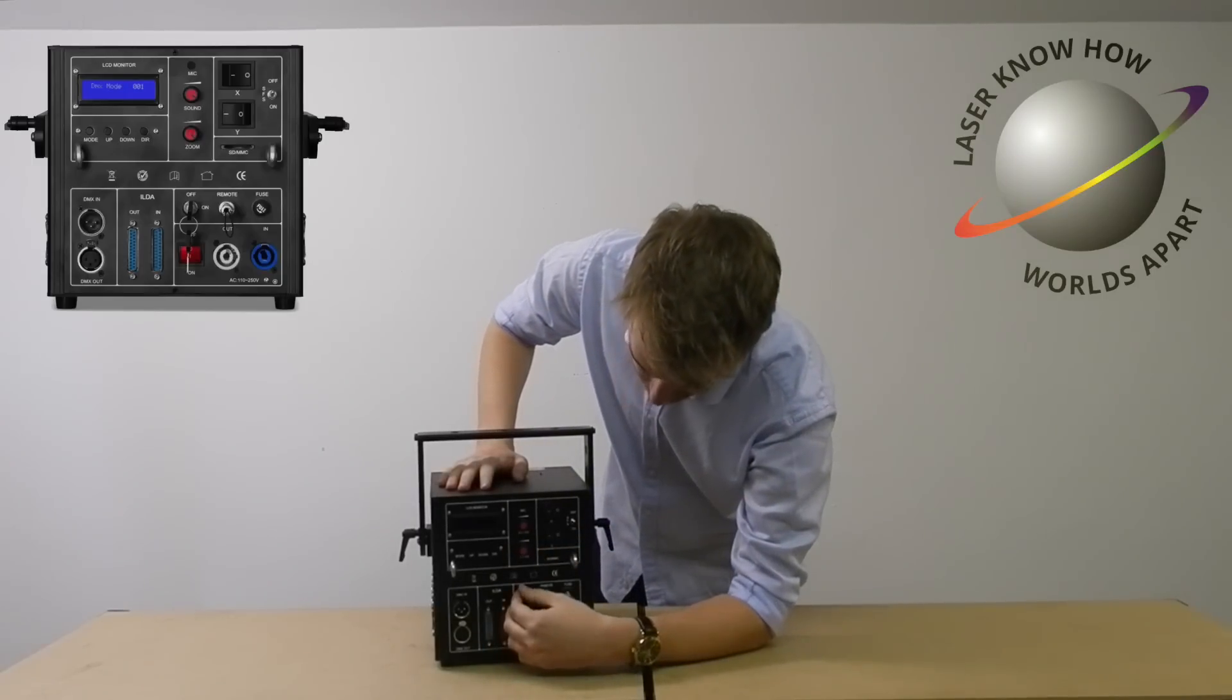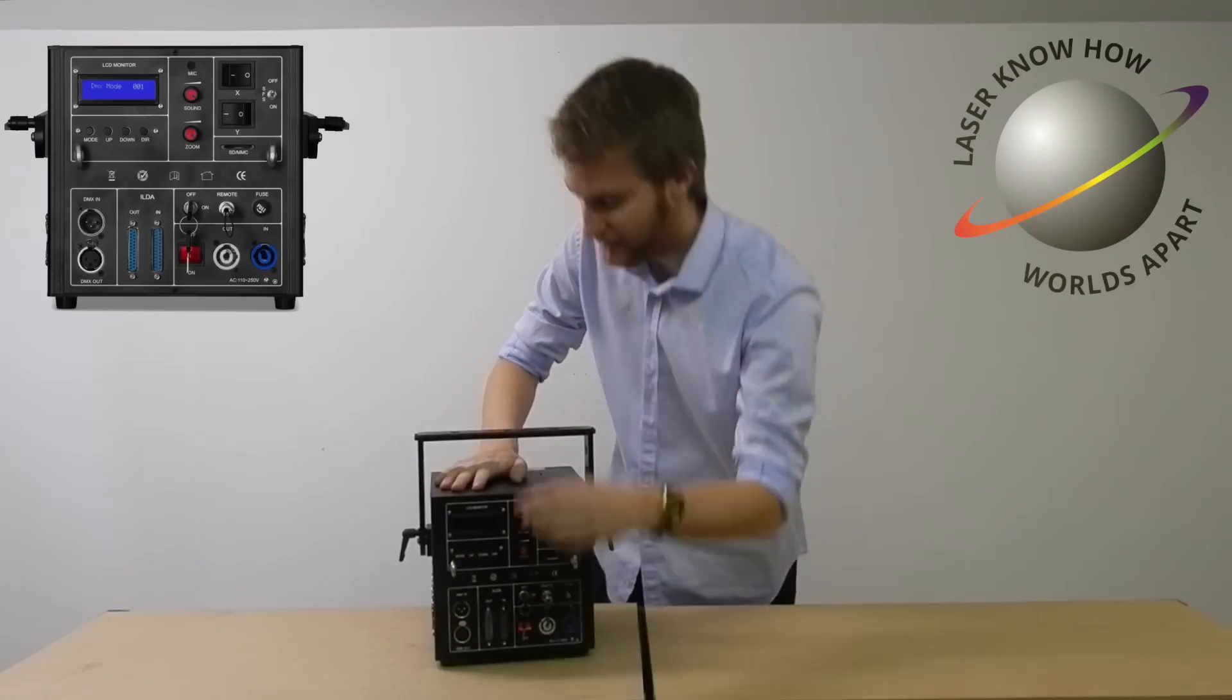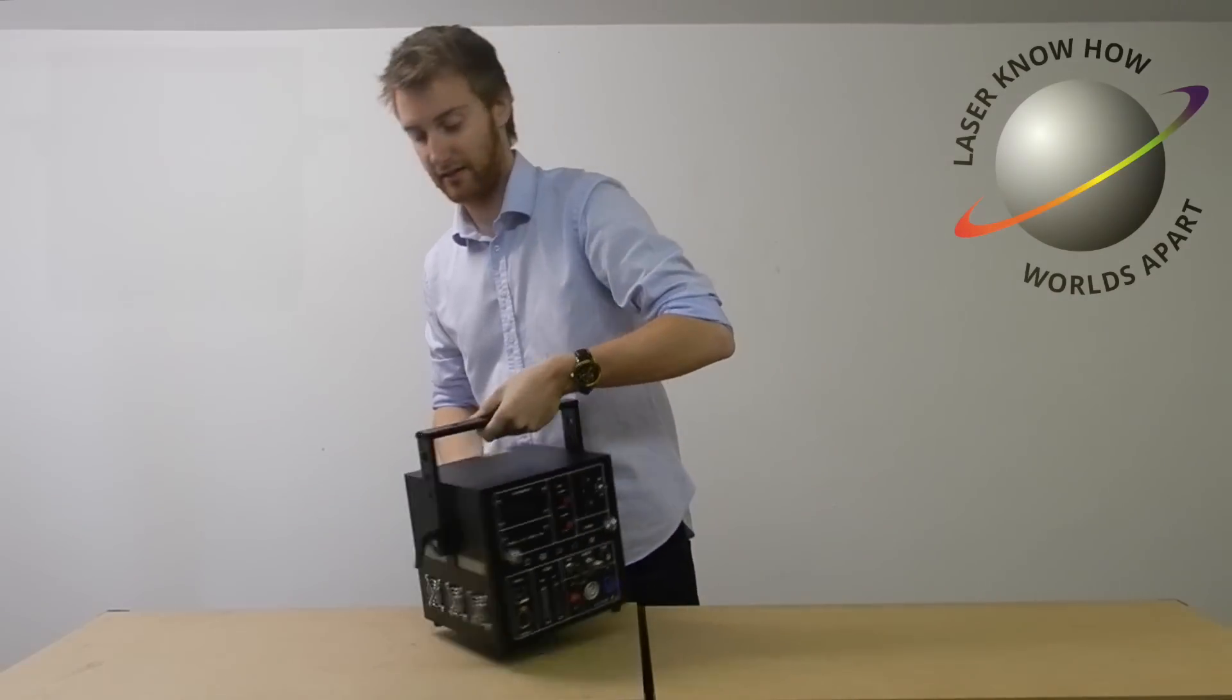So I think that's everything we've got on the back, obviously two safety chain hooks as well so if you're going to height mount it. I think that's about everything, let's take a look at the front.